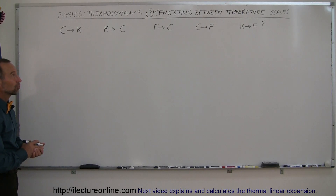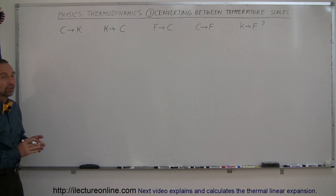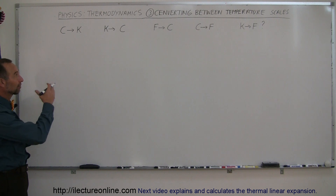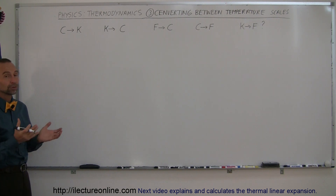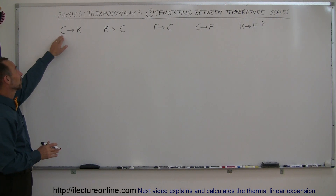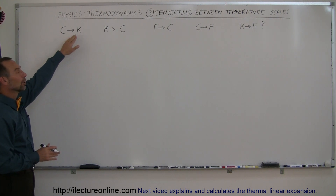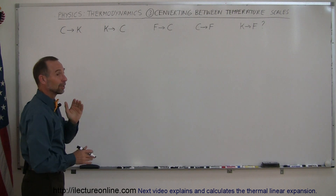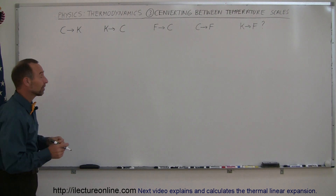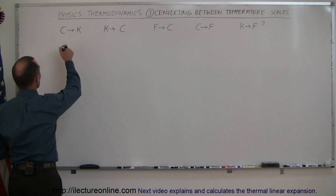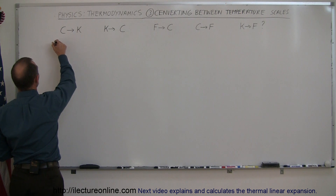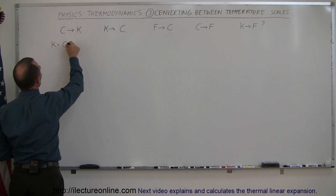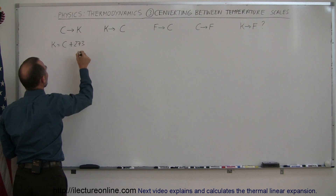Now that we understand the temperature scales, we're going to see how we can convert from one to another. Here we have some conversions we're going to talk about, starting with converting from centigrade degrees to Kelvin degrees. If you want to go from centigrade to Kelvin, you need to add 273. So the equation would be that Kelvin degrees is equal to centigrade degrees plus 273.